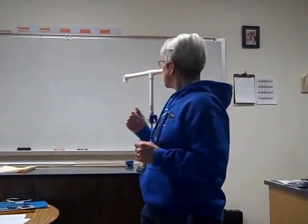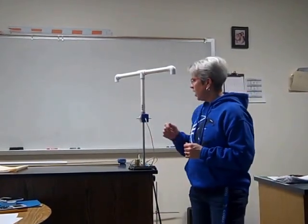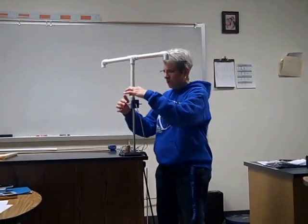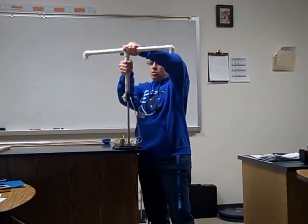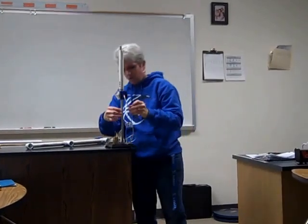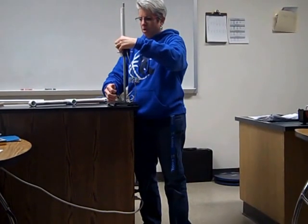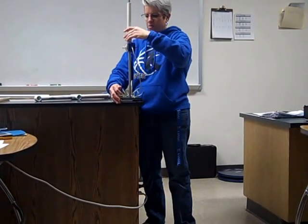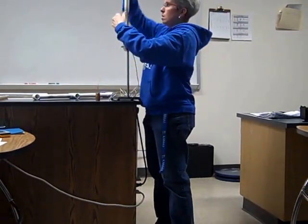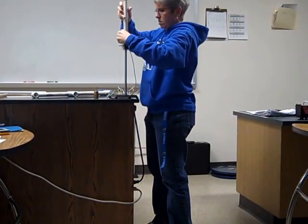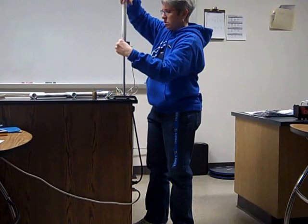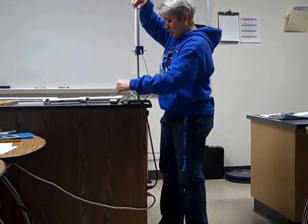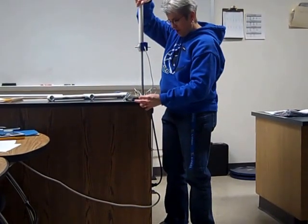Today we're going to look at this rotating pipe system. Up here we have a piece of PVC pipe with a pretty small radius. We have a string attached to it, and the string goes over this pulley. We're going to allow this mass on a string to fall and pull this pipe around and allow it to spin. Because it starts off not spinning and we want to change it into spinning, you can see how easy or hard that is to do.